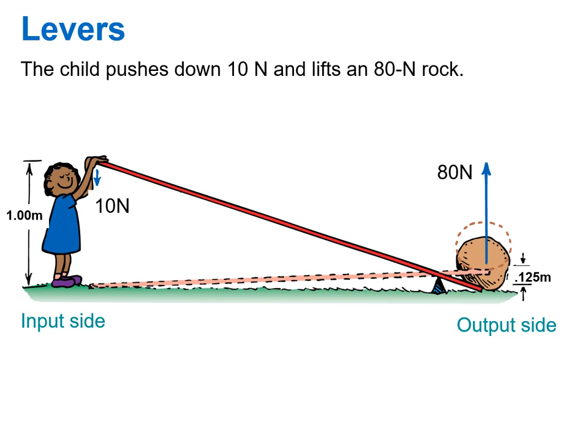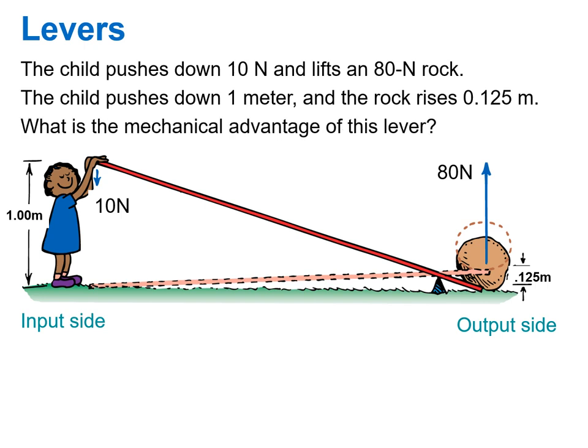Let me give you a little example of not only how to calculate mechanical advantage, but an understanding of what it means and why it is important. Here we see the child pushing down on one side. We're going to call that the input side and lifting a rock on the other side. We'll call that the output side. The child pushes down 10 newtons of force, lifting an 80 newton rock. She pushes for one meter and the rock rises 0.125 meters. So the question is this time, what is the mechanical advantage of this lever? Well, we have two ways to calculate it.